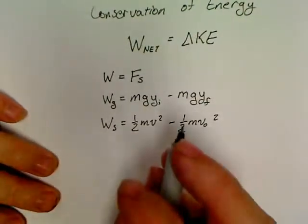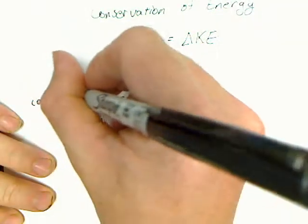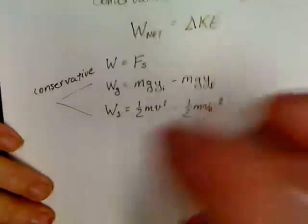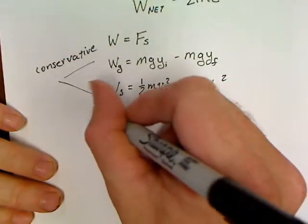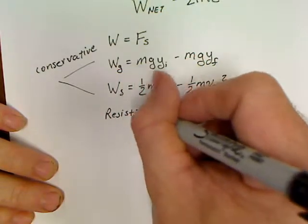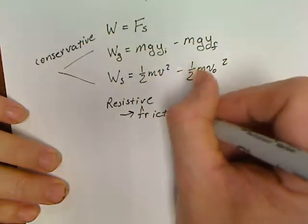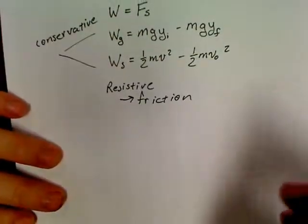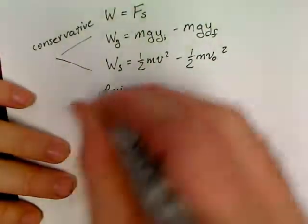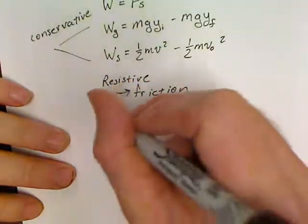Now, all these forces are what's referred to as a conservative force. Those are conservative. But we can look at certain types of resistive forces. Resistive. We can take something, for example, like friction.